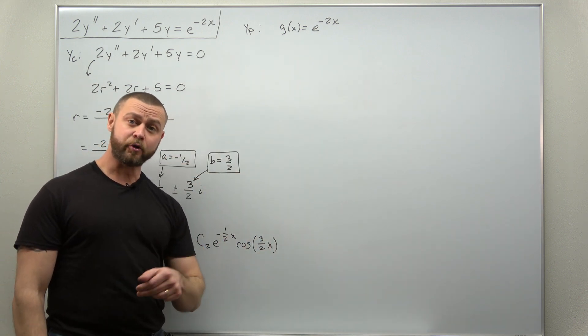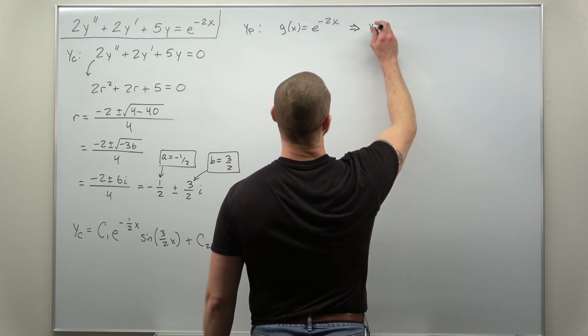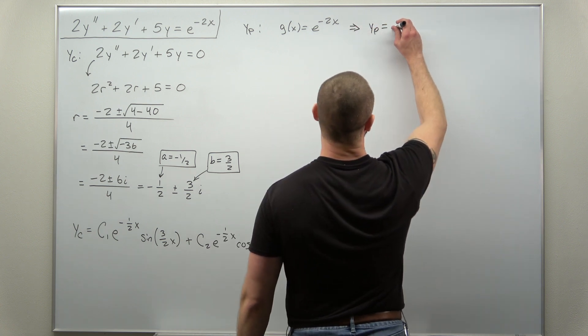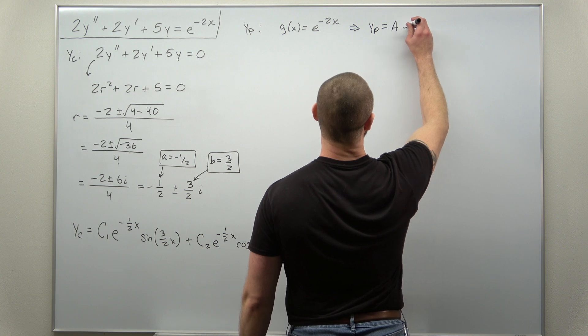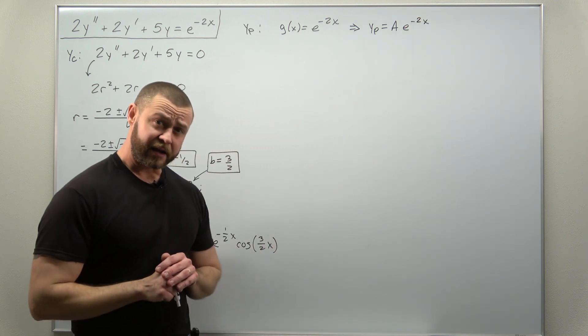That means we can just use our initial choice for the particular solution based off of g of x, which is a general exponential function with a constant in front. We might write that as a times e to the negative 2x.